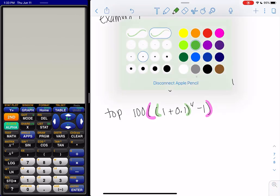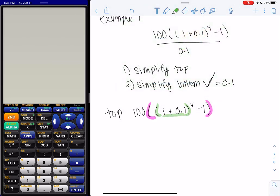So the way order of operations works is we're going to start from the inside and work our way out. So we're going to start with 1 plus 0.1, which is 1.1.